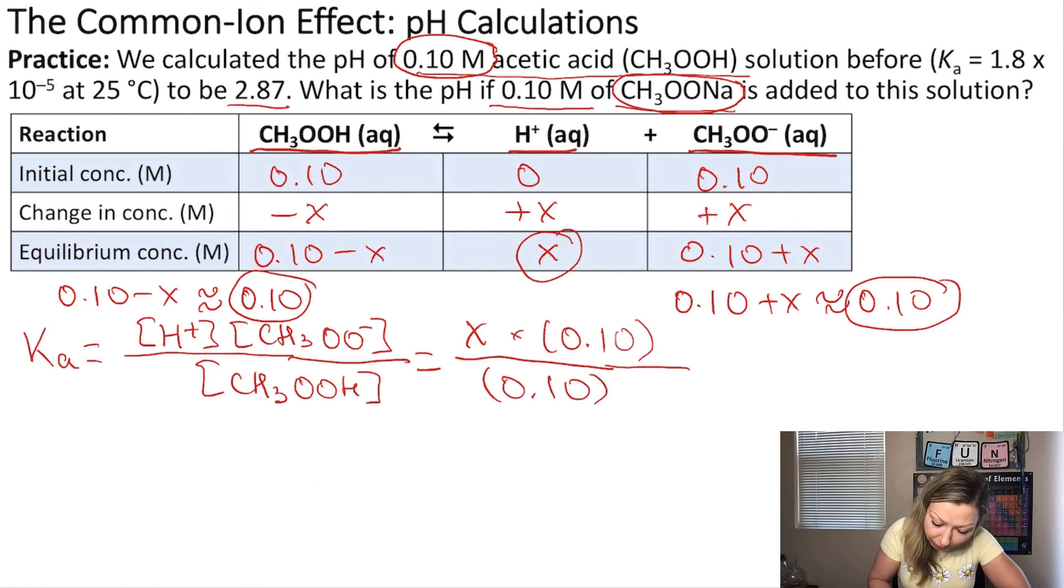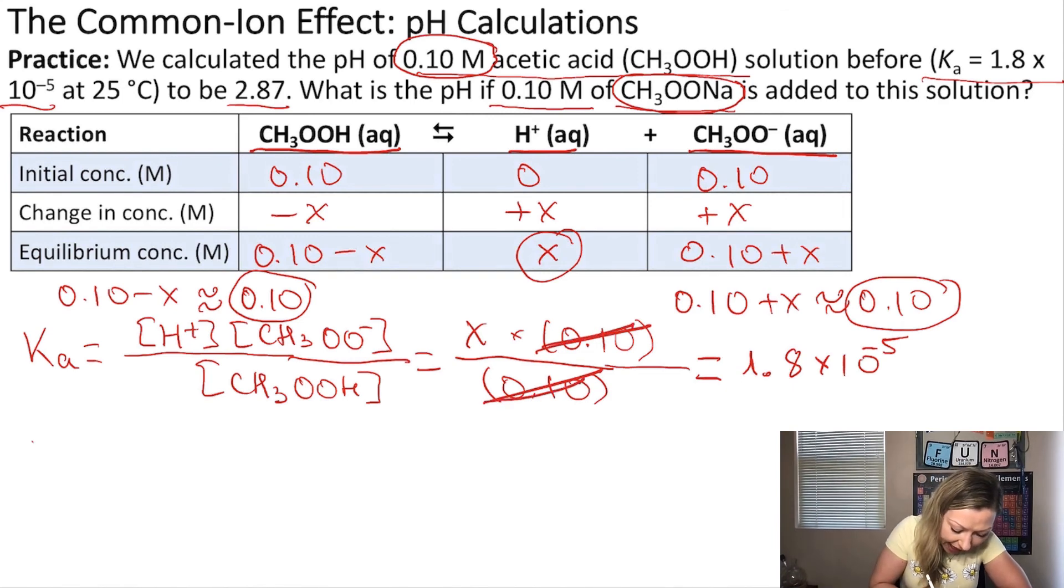Okay, so these concentrations will cancel out. And I know that the acid dissociation constant for acetic acid at 25 degrees Celsius is 1.8 times 10 to the negative 5. So this expression equals 1.8 times 10 to the negative 5. And because my concentrations canceled out, my X is going to equal 1.8 times 10 to the negative 5.